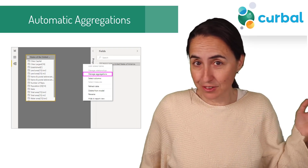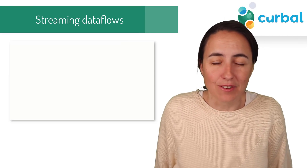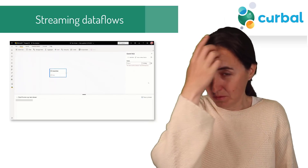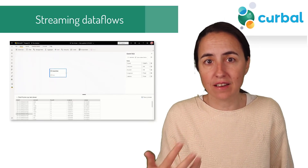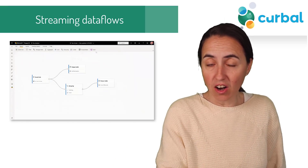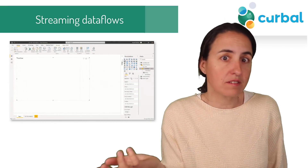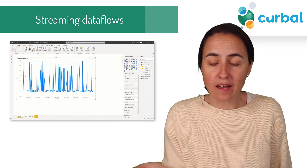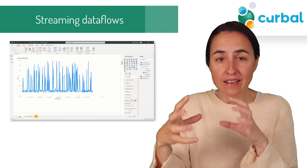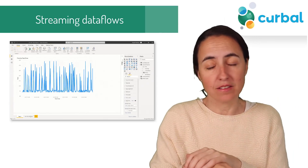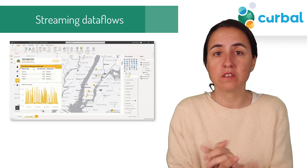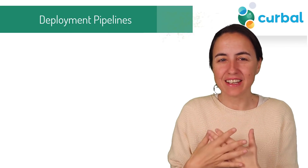The next one is streaming dataflows, and this is going to be exciting for companies or people that have live data. In their example, they are visualizing where taxis are around New York. Any type of live data you can put through Power Query, clean it live, and then display it — a beautiful update if you have live data, otherwise there's not going to be a lot of use for you.